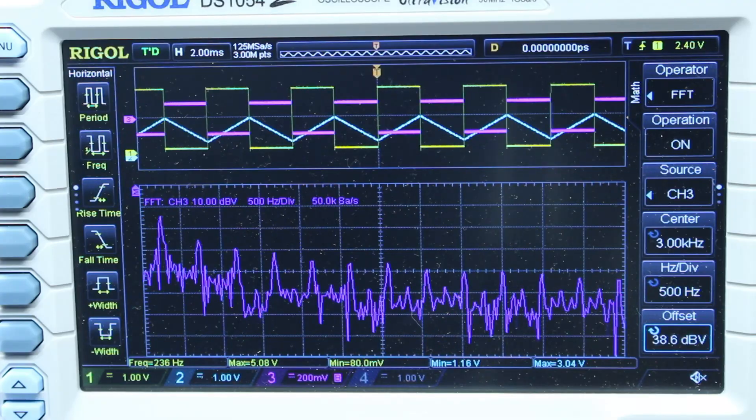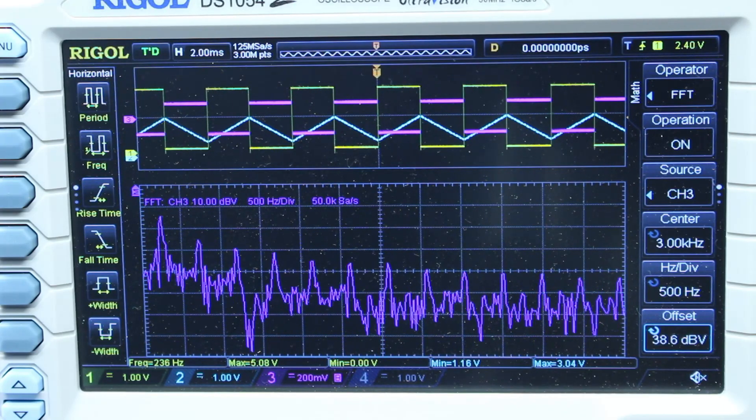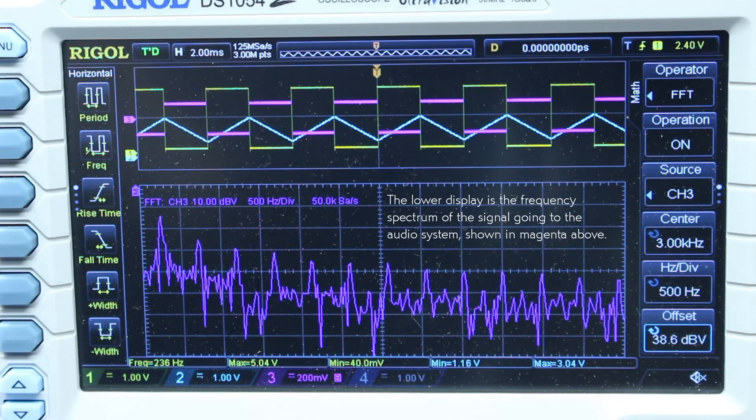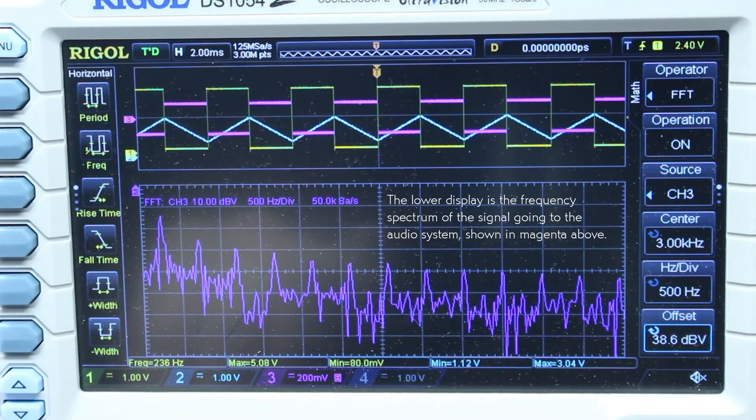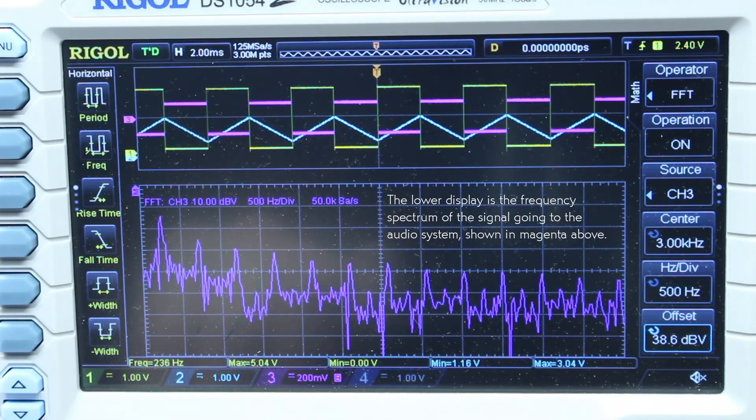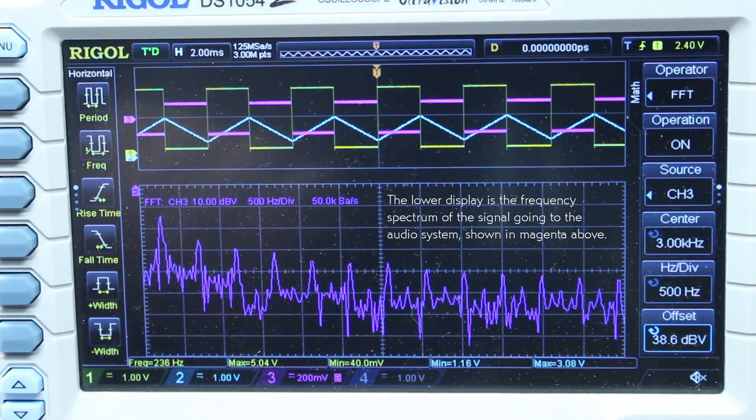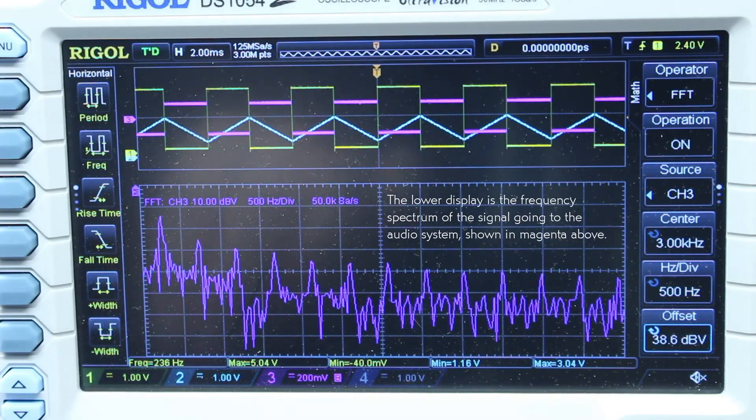I've wired it into the Schmitt trigger, and set up the scope to watch the waveforms. I can get a nearly perfect triangle wave, and the corresponding square wave. By twiddling the pots, I can vary the frequency from about B0 near the bottom of the piano keyboard, to nearly an octave beyond C8 up at the top.